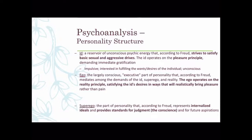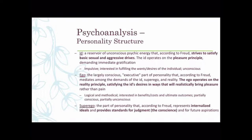The ego operates on the reality principle. It weighs costs and benefits and figures out how to realistically bring pleasure rather than pain. The ego is logical and methodical, interested in ultimate outcomes, and is partially conscious and partially unconscious. For example, if the id wants to steal an Xbox game, the ego weighs the costs and benefits — how likely am I to get caught? If it's likely, the ego says don't do it, because the consequence outweighs the pleasure.